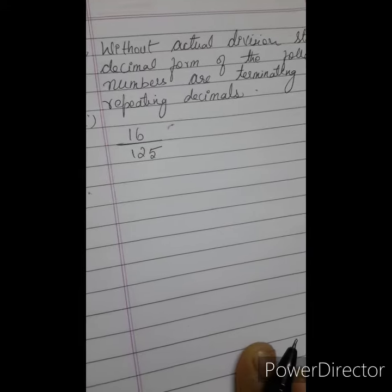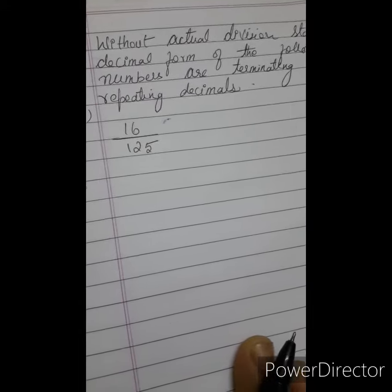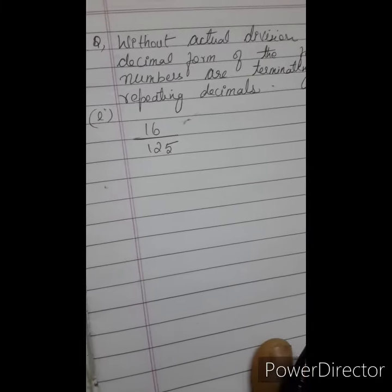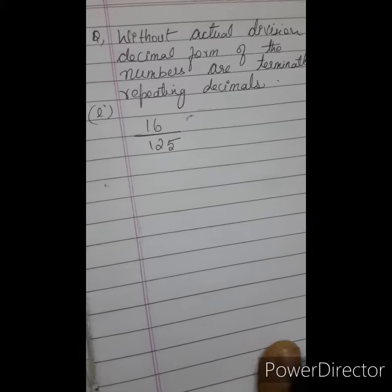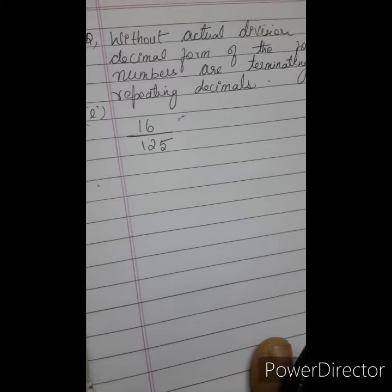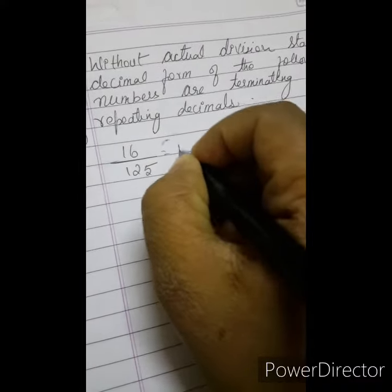Without actually dividing, we are going to say if it is terminating or non-terminating. Okay, shall we start? The number is 16 by 125. This is in the form of P by Q.